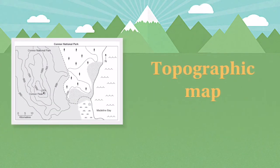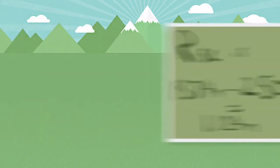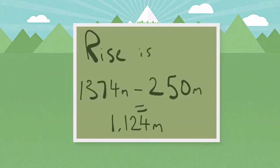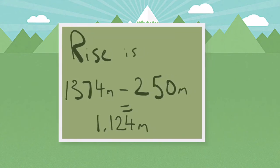Here's another example using a topographic map. If our two points were those highlighted above, then by taking the highest point and deleting the lowest point we get our rise: 1124 metres.